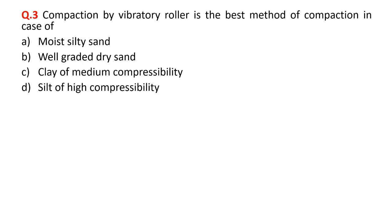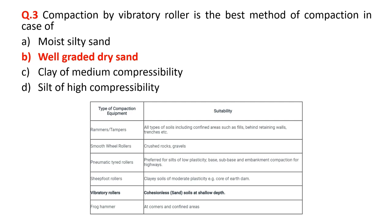The correct answer for this particular problem is well-graded dry sand — option B. Sands are compacted using vibratory rollers. For clays, we go for sheepsfoot rollers. For silts, we go with pneumatic tired rollers. Smooth-wheeled rollers are used for crushed rocks or gravels. Apart from that, we have frog hammers, rammers, or tampers, which are used in confined areas where main rollers cannot work — for example, behind a retaining wall or inside a trench.